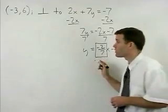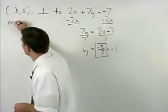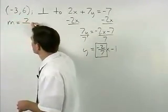So the slope of our line, m, is positive 7/2.